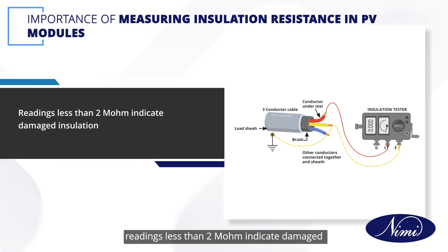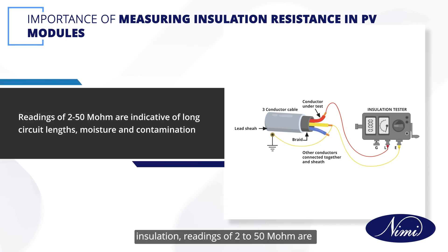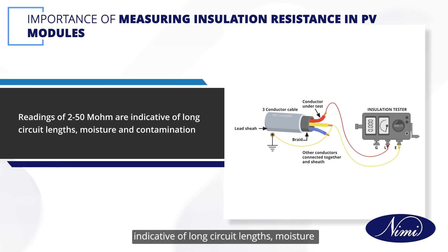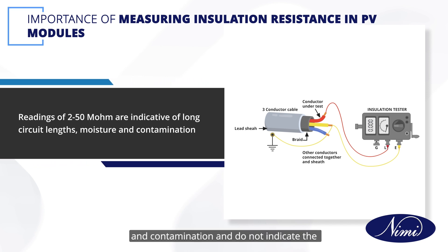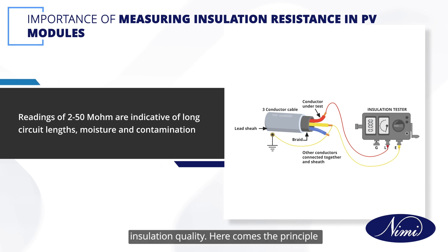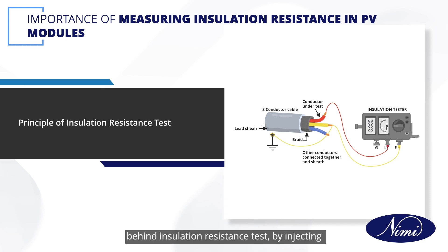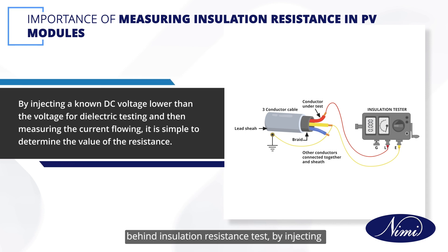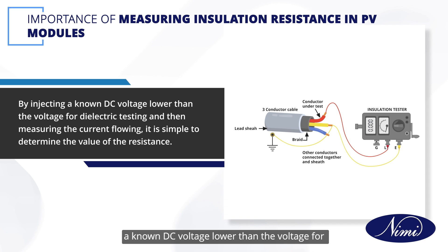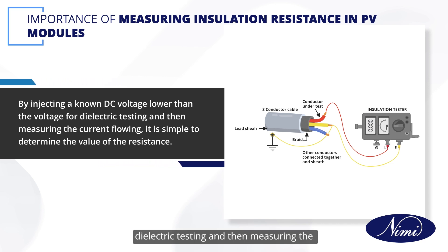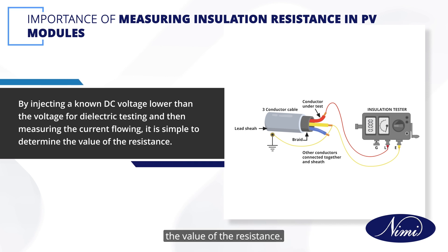Readings less than 2 megohm indicate damaged insulation. Readings of 2 to 50 megohm are indicative of long circuit lengths, moisture and contamination, and do not indicate the insulation quality. The principle behind insulation resistance testing is: by injecting a known DC voltage lower than the voltage for dielectric testing and then measuring the current flowing, it is simple to determine the value of the resistance.